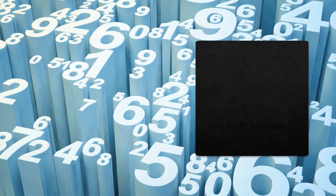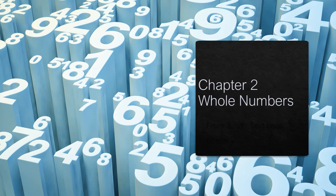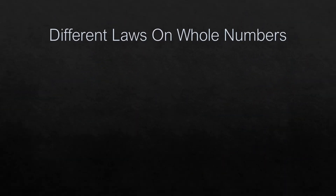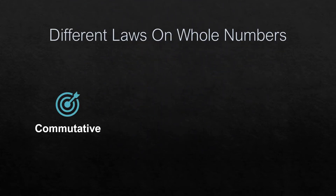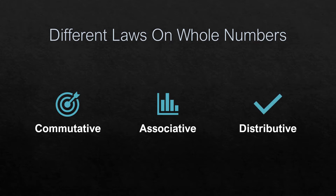Assalamu Alaikum. Class 5, this is Chapter 2 - Whole Numbers from the Syntax book, Class 5. The topic is different laws on whole numbers. Number one is commutative, two is associative, and the third one is distributive.